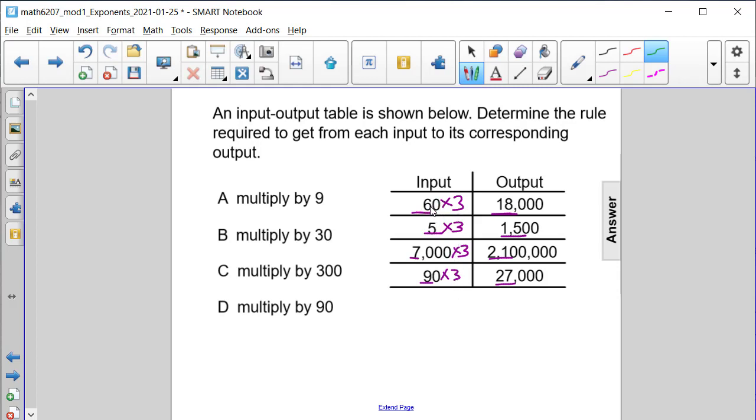Our first set is 60 and 18,000. 60 has one zero in it already, so this first zero that occurs in 18,000 is taken care of by the 60. That leaves us with two more zeros, so I'm thinking it's going to be 300.